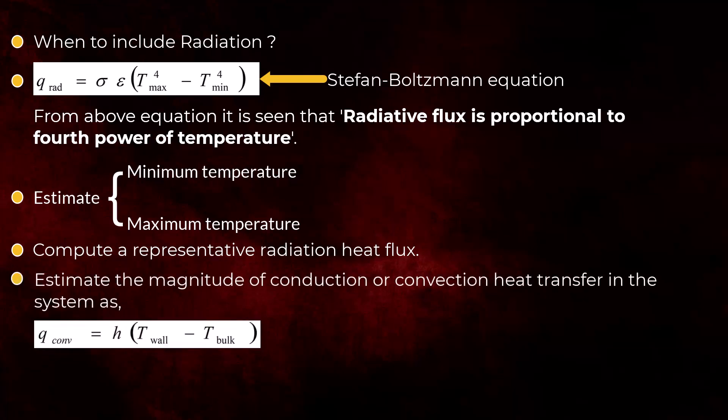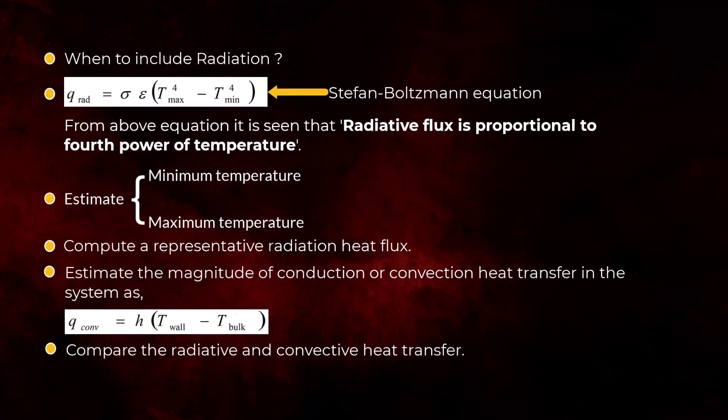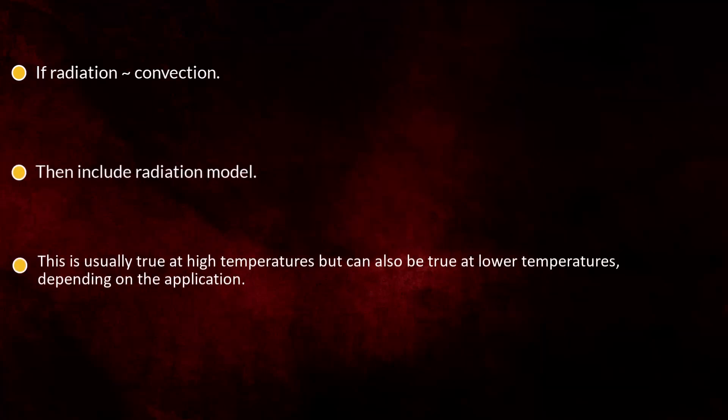Next, do the same thing for conduction or convection, and then compare the two fluxes. If the radiation is about the same order of magnitude as convection or higher, then a radiation model should be used. This is usually true at high temperatures, but radiation can sometimes also be important at temperatures lower than you might expect, so it's a good idea to do this kind of estimate before setting up your simulation.